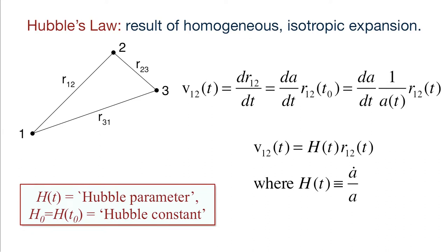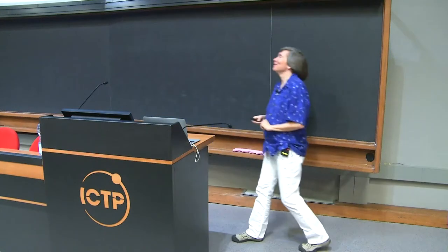The Hubble parameter, defined as A dot over A, generally varies with time in an expanding universe. The value of the Hubble parameter measured right now — more accurately by Wendy Friedman and her collaborators than by Edwin Hubble — is called the Hubble constant. So the Hubble constant is the value of a time-varying parameter as measured at a particular time.